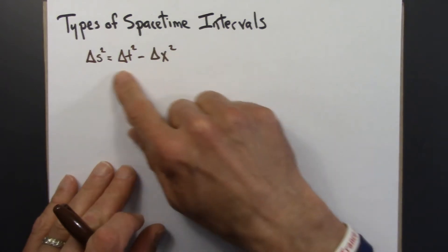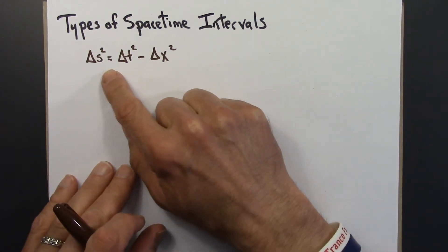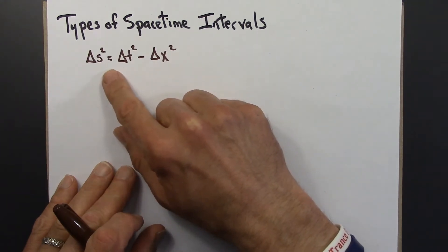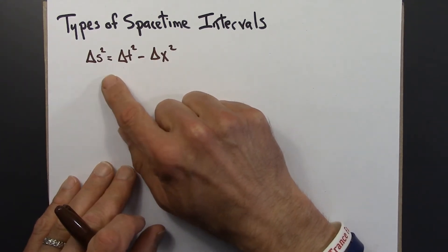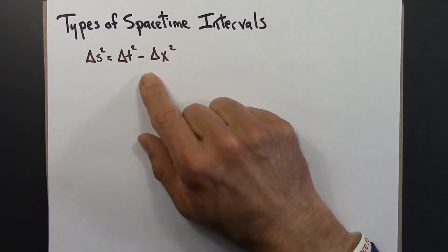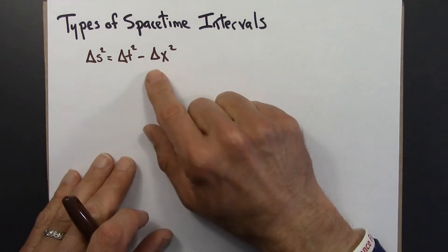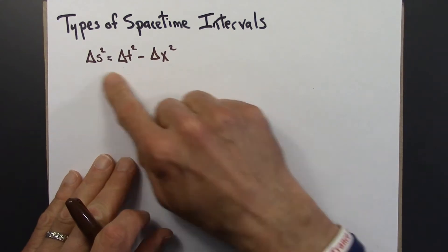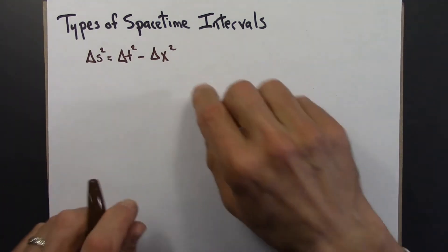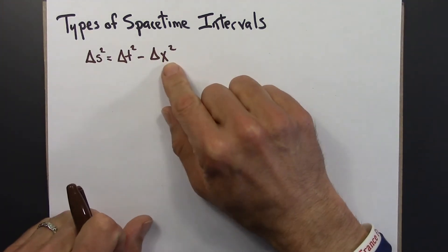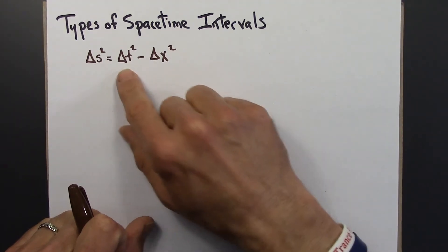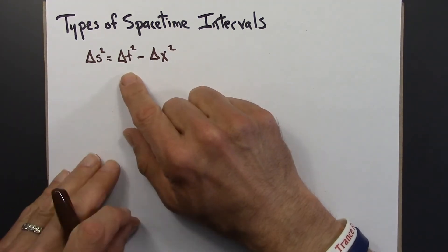Recall that the space-time interval is given by the metric equation, and we've been using this formula for quite a few units. Really, this is the basic equation from which all the other relativity results have followed. That's not surprising because this tells us how to measure distances in space-time. It tells us what the geometry of space-time is, and then from that geometry, lots of results follow.